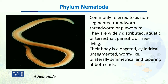Commonly, these nematodes are referred to as non-segmented roundworms, threadworms, or pinworms. They are widely distributed in all environments, mostly aquatic or terrestrial. They can be parasitic or free-living. Their body is elongated — as you can see in the diagram, it is displayed in the form of an S — and it is cylindrical and unsegmented, just like worms.